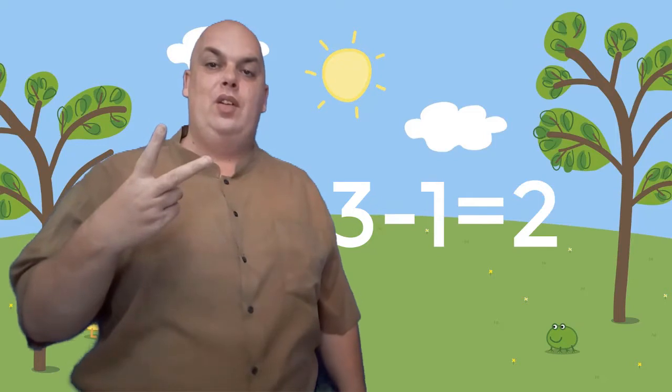So what exactly does the minus symbol do? Well, it takes things away. So for example over here we have three minus one — equals how many? We have three, minus one, so we take one away. How many do we have left? Yes, two. So three minus one equals two.